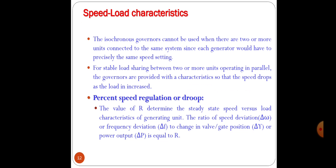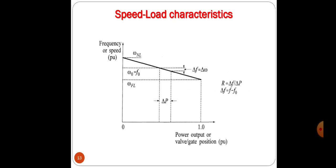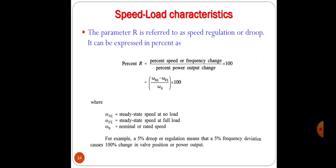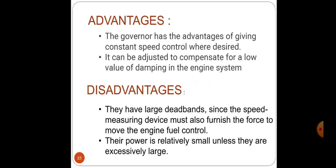Now we will see about advantages and disadvantages. The governor has the advantages of giving constant speed control where desired. It can be adjusted to compensate for a low value of damping in the engine system, and it has a dashpot including a needle valve whereby one of the governor constants can be varied readily.